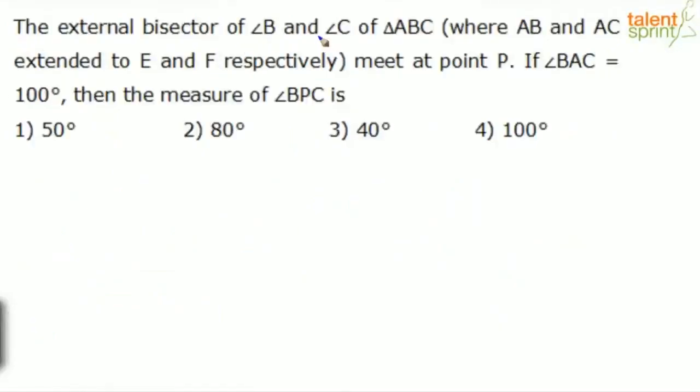The external bisector of angle B and angle C of triangle ABC where AB and AC are extended to E and F respectively meet at point P. So let's consider a triangle ABC. This is A, B and C, triangle ABC.